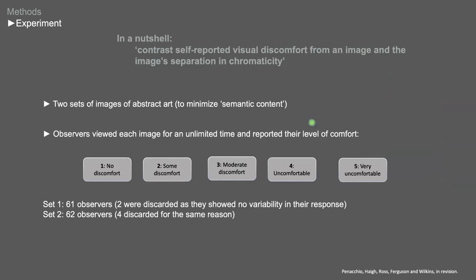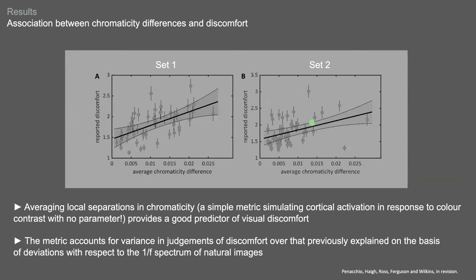So to test the metric, we defined a first experiment that can be summarized in a single sentence. Contrast self-reported visual discomfort from an image and the image average separation in chromaticity. So we simply asked observers to rate images of abstract art, to rate them for discomfort on a Likert scale, and we contrasted the ratings to average separation in chromaticity. So we found that this metric that averaged local separation in chromaticity provides a good predictor of visual discomfort. And the metric accounts for variance in judgment of discomfort over that previously explained using the profile of luminance and deviation with respect to the 1 over f spectrum of natural images.